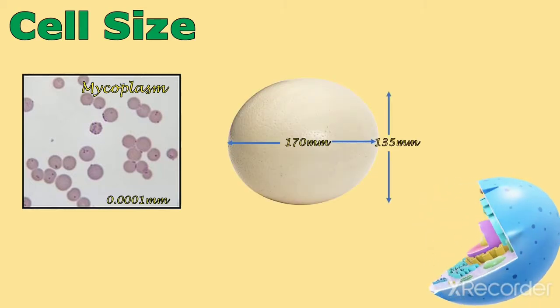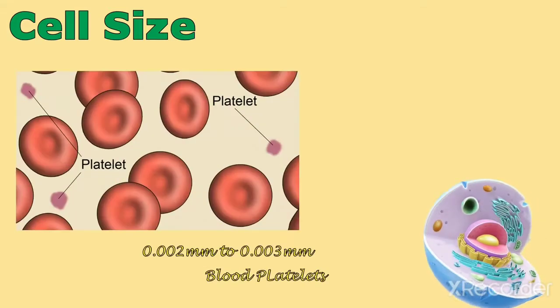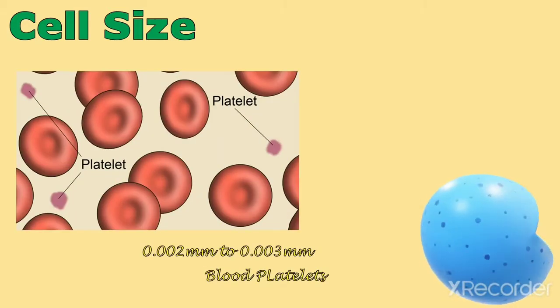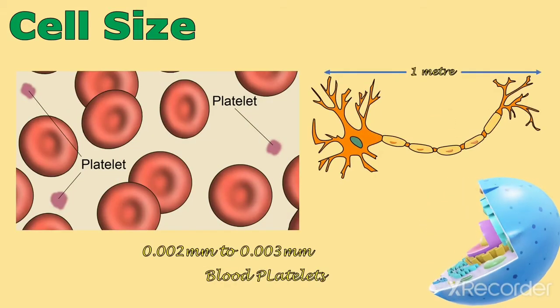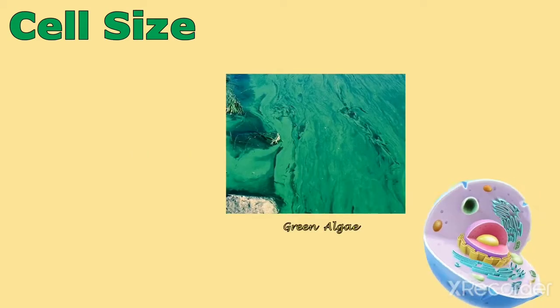The smallest cell of human body is blood platelet, while the largest size cell is nerve cell. In plants, the largest cell is of green algae.